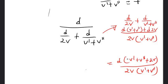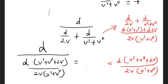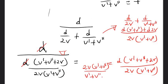Now total time is D(V' + V'' + 2V) over 2V(V' + V''). What we have to do is divide the total distance by the total time. Total distance is D. The D's cancel off, and 2V goes to the numerator. So we get the average velocity equals 2V(V' + V'') over (V' + V'' + 2V). That's the answer.